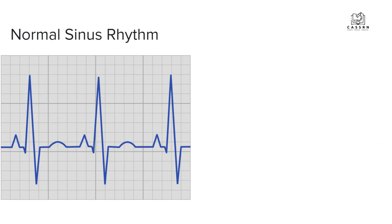The most important thing is that you need to understand normal sinus rhythm. When you understand what normal sinus rhythm looks like, you'll be able to recognize when someone has a dysrhythmia. But always make sure you're assessing your patient, because the machine might show a dysrhythmia but your patient could be sitting quietly reading a magazine with no signs of distress. You may need to assess electrode placement, or your patient may have a tolerance to some types of dysrhythmias. Assessing your patient is the most important thing you can do as a nurse.